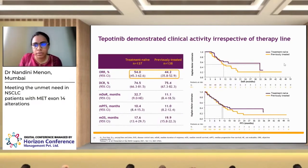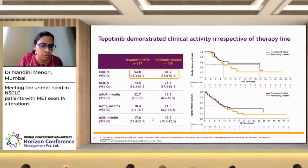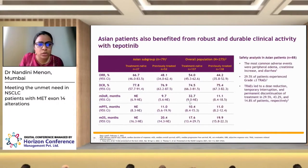Kaplan-Meier data confirms efficacy of tepotinib in both first-line and second-line-and-beyond settings. The purple line represents the treatment-naive group and there is clear efficacy in both settings. In treatment-naive patients, the ORR was 54%, median PFS was 10.4 months, and OS was 17.6 months. In previously treated patients, PFS was 11 months and OS was 19.9 months. Asian patients, comprising about one-third of the study, also responded similarly to the overall population, though Indians were not part of the study.